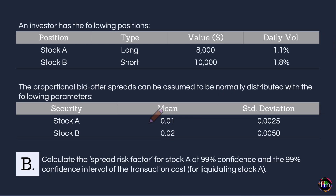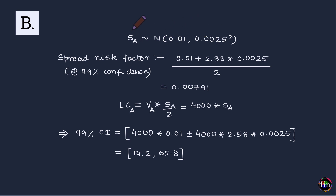Moving on to the second question: we now treat the proportional bid-offer spread as random. We are asked to calculate the spread risk factor for stock A at 99% confidence, and the 99% confidence interval of the liquidation cost of stock A.